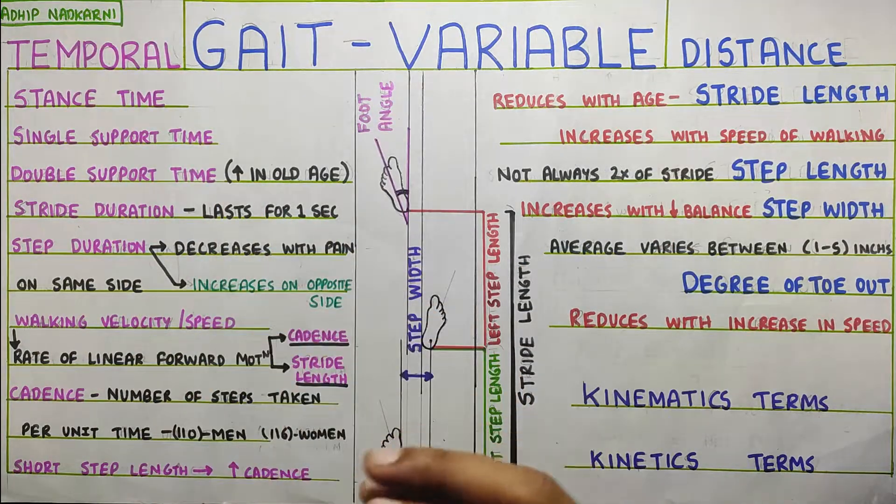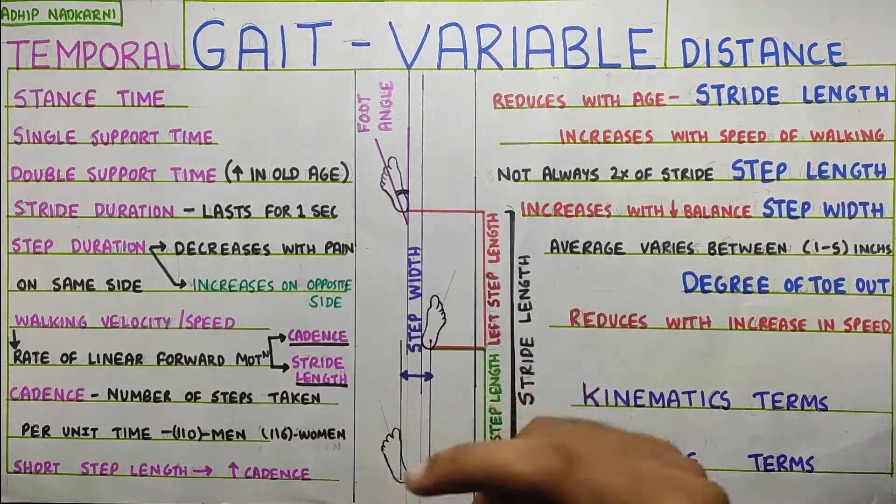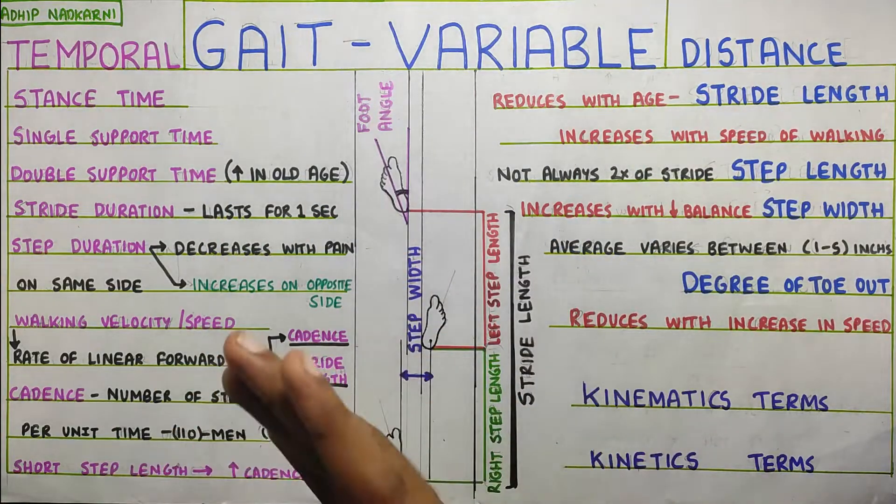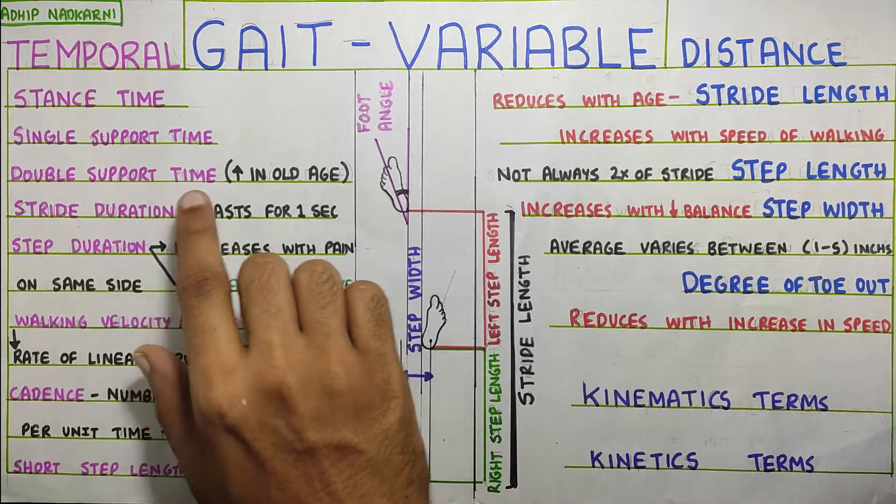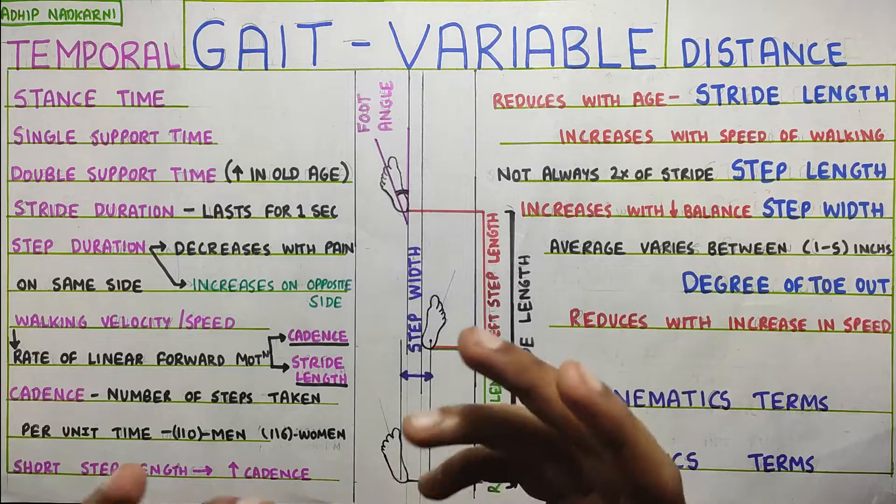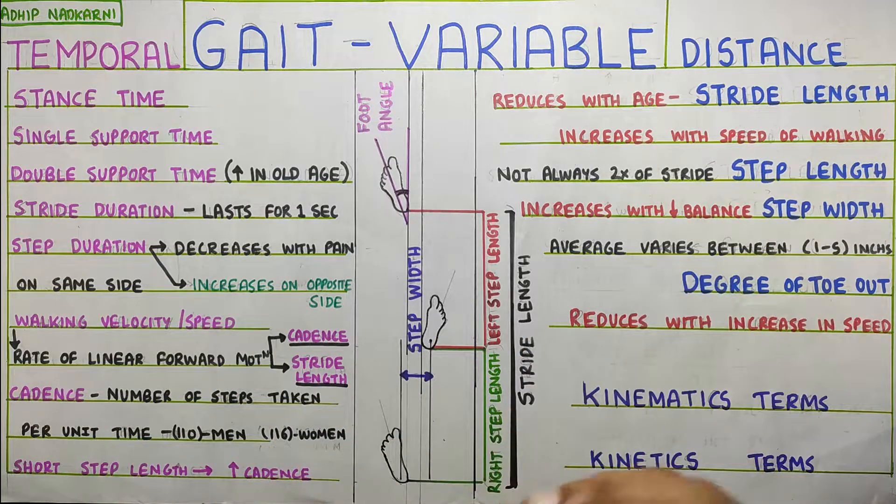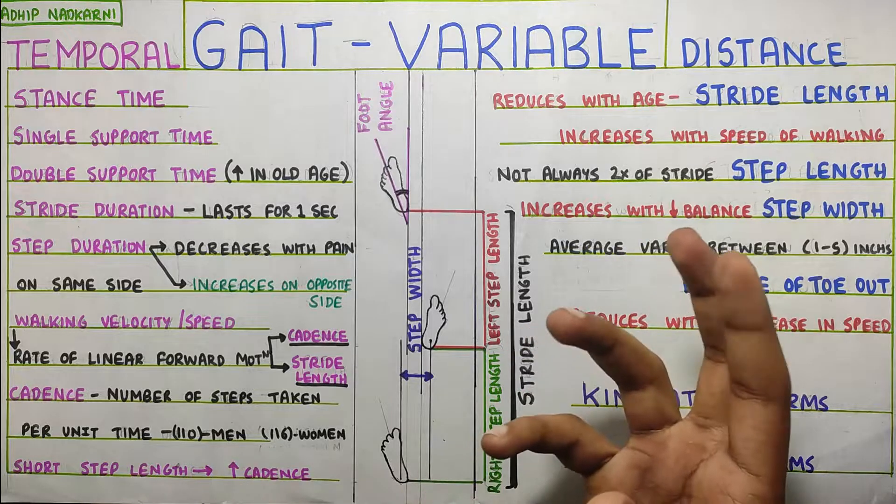This will increase your stability. So, it will be more in old age. So, that will tell you that if a person, if you analyze his gait and if his double support time is more, that means he's having problem with balance. So, this way gait variables can help us analyze a person's gait and get better insights into their muscle weakness and range of motion problems.